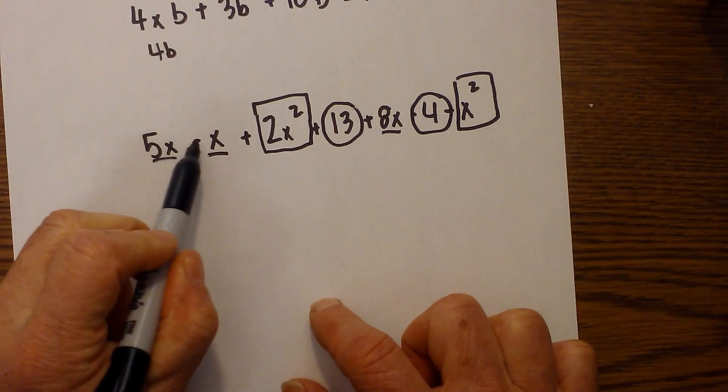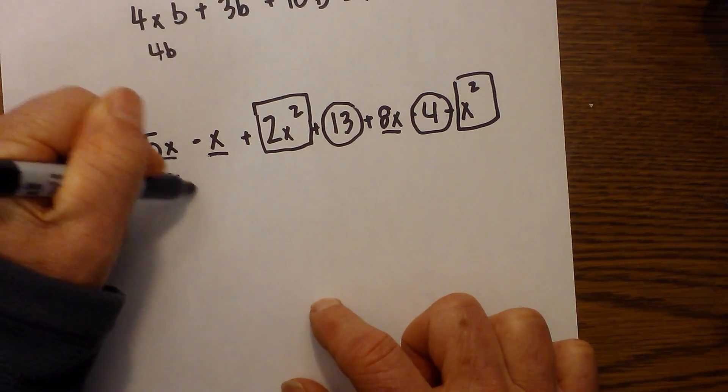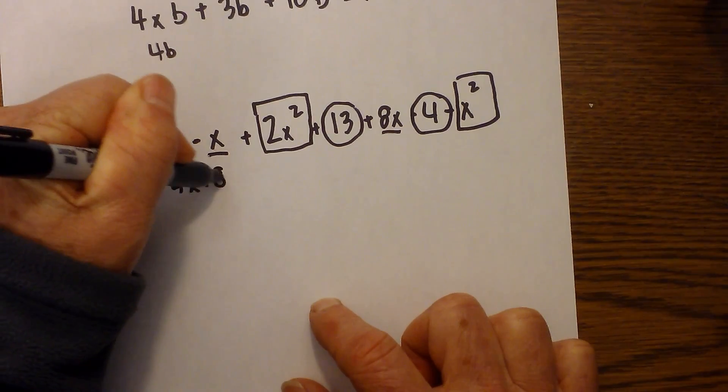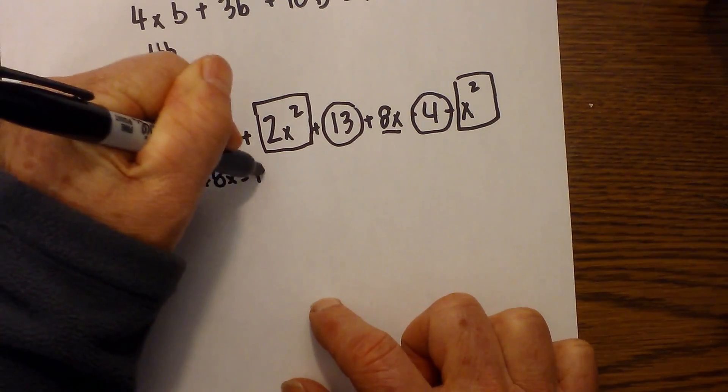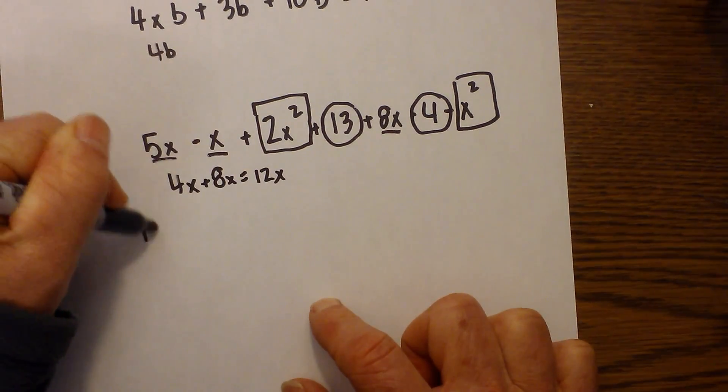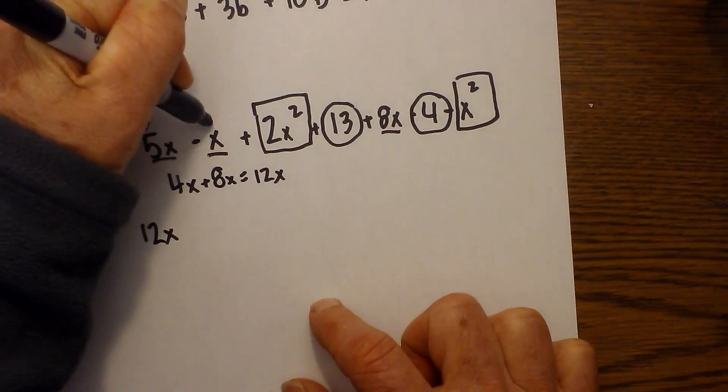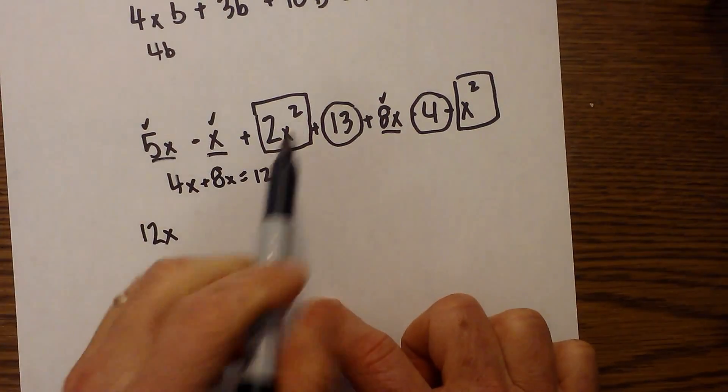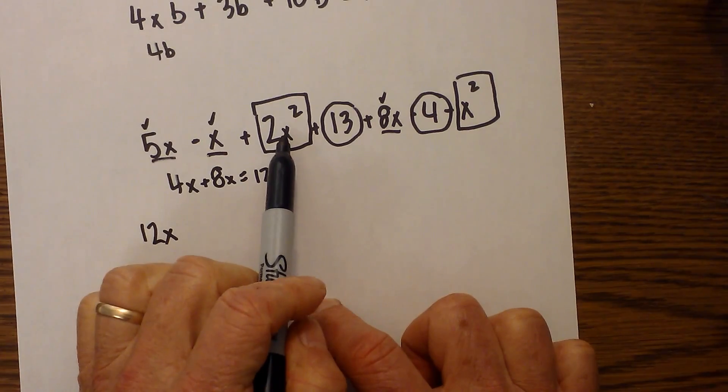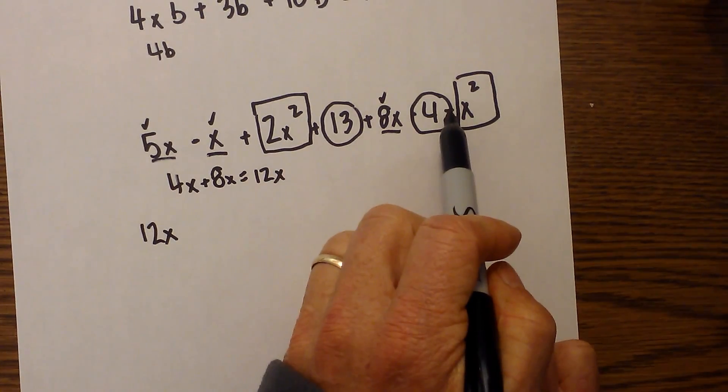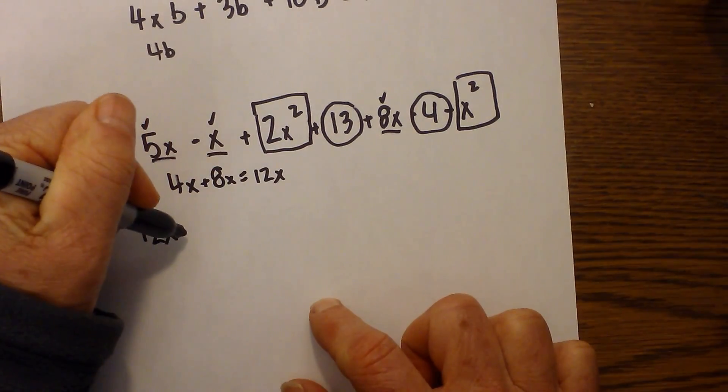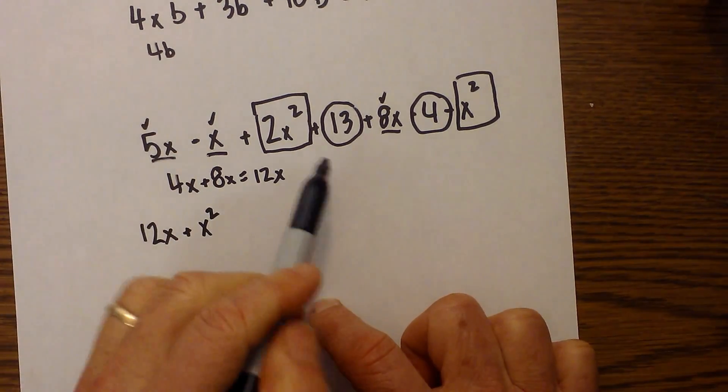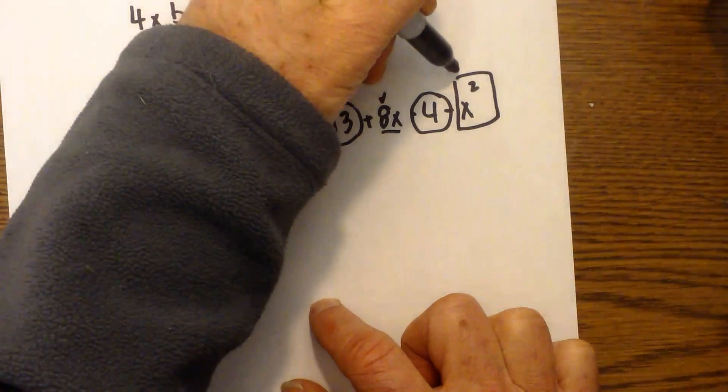So now, let's just start combining like terms. With the underlines, we have 5x minus x is 4x. And then we have an 8x. So that becomes 12x. So I'm going to write this down here. So we have 12x. I'm going to put a check mark by what we've gone over to make sure we do everything correctly. And then we have the boxes x squared. And that's a minus x squared. So that becomes a positive x squared.